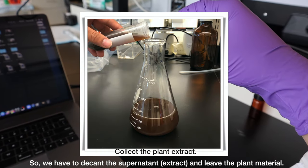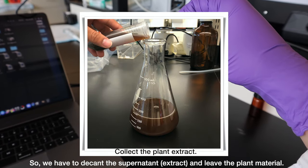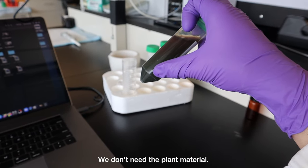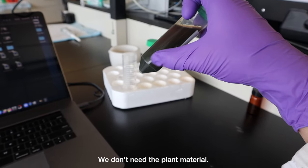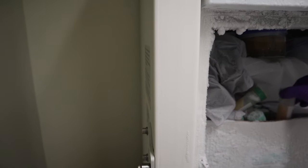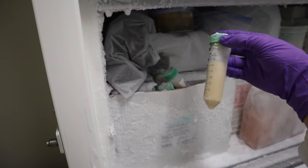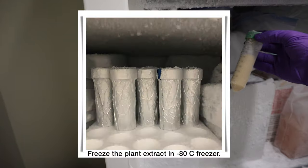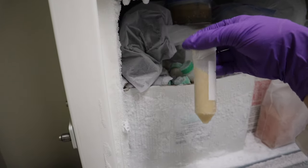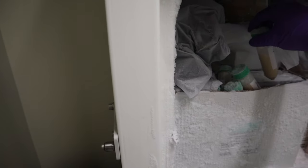We have to separate the supernatant and the plant extract from the plant material, all the leaves, because we don't need this part. After collecting the plant extract or the supernatant after the centrifuge, we put it in a centrifuge tube. Then, put this in the negative 80 degree freezer to freeze the plant extract.